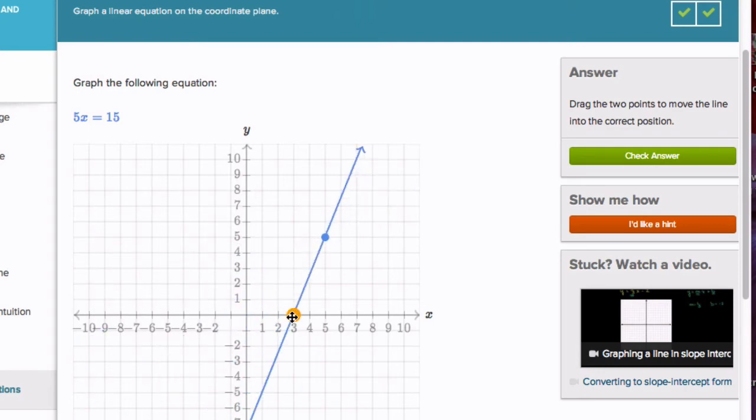So I'll pick one point here. This is the point (3, 0). x is 3. I'll pick another point. This point right here, (3, 5). x is 3.